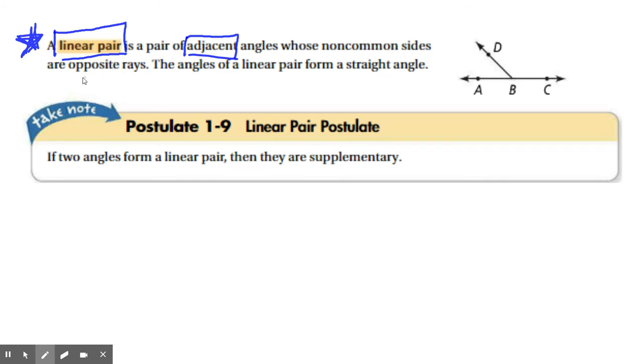So they are two angles that form a line that make a straight angle. There are two angles that make 180 degrees. So the linear pair postulate should only make sense to you. If two angles form a linear pair, then they are supplementary. They add to 180 because they make a straight angle, which is 180 degrees.